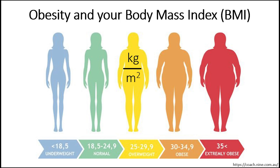The obesity epidemic and all of its consequences are constantly in front of us. Obesity is defined by your body mass index, or BMI. BMI is used to screen for weight categories that may lead to health problems. Your BMI is calculated as your weight in kilograms divided by the square of your height measured in meters. BMI measurement has been validated for both men and women over the age of 20 and is a reliable indicator of body fatness for most people. A BMI less than 18.5 is considered underweight. A BMI 18.5 to 25 is considered normal or healthy weight. BMI 25 to 30 is considered overweight. A BMI greater than 30 is frankly obese. BMI greater than 35 is morbidly obese. And obesity is always dangerous.